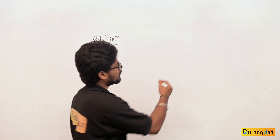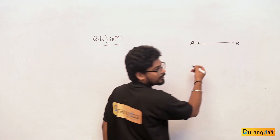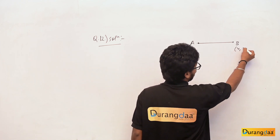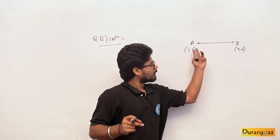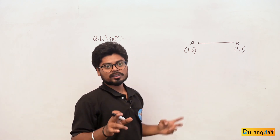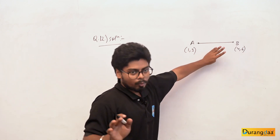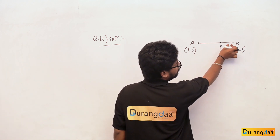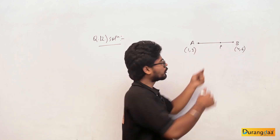We have a line segment AB. Point A has coordinates (1,3) and point B has coordinates (4,6). Point P divides AB internally in the ratio 2:1, meaning P lies between A and B, closer to B. So P is located about two-thirds of the way from A to B.